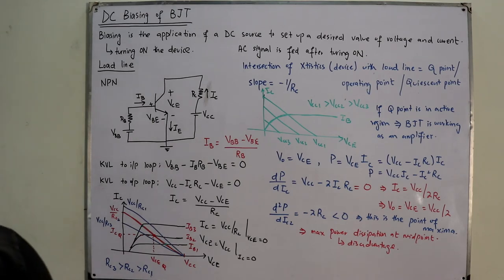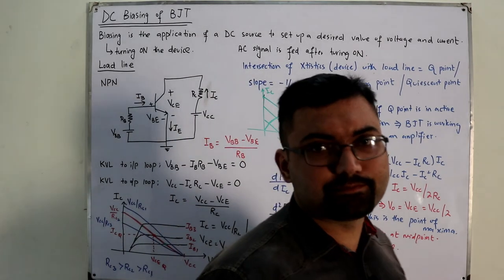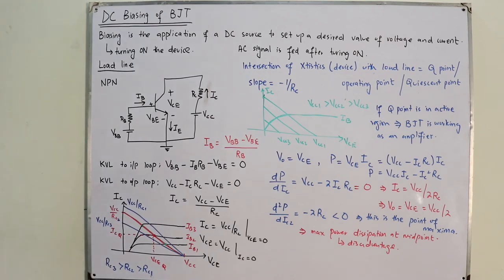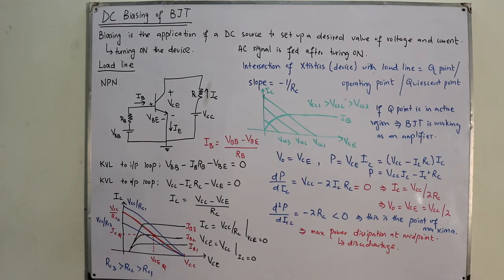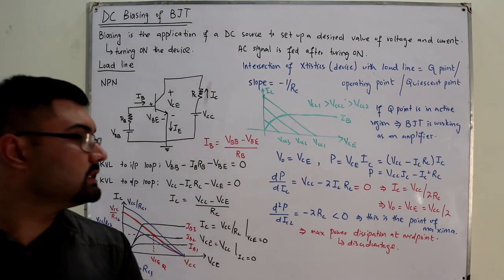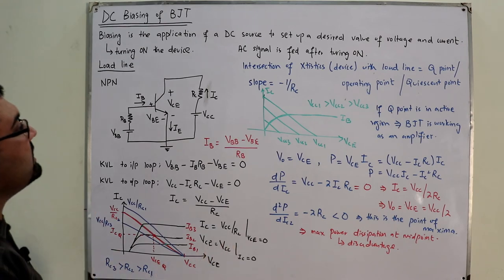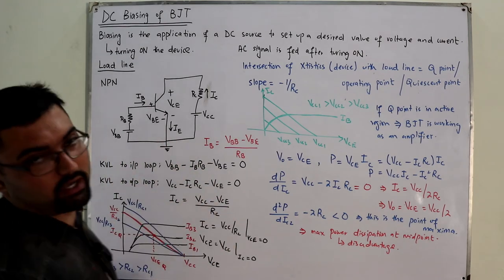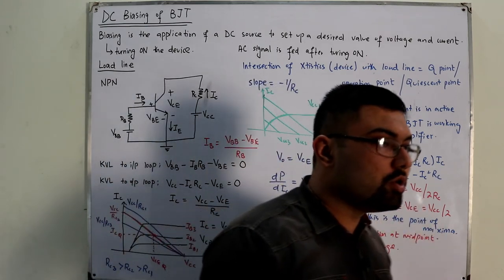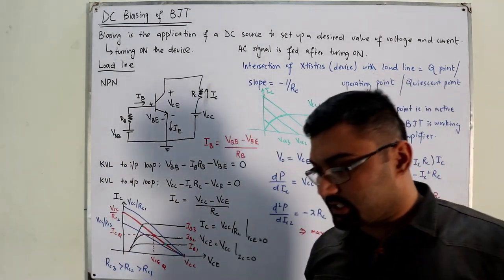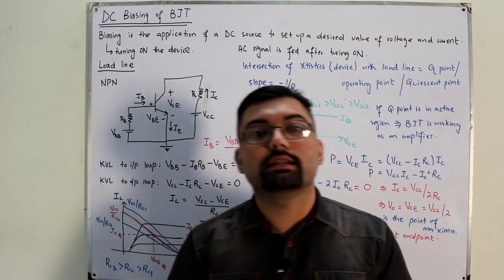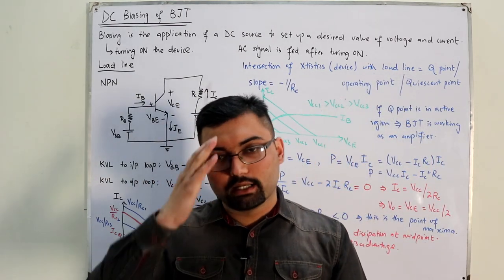We'll move on to Q point stability in the next video. The DC biasing of BJTs has been introduced as an overview; detailed discussion will follow. Till the next video — take care, goodbye.